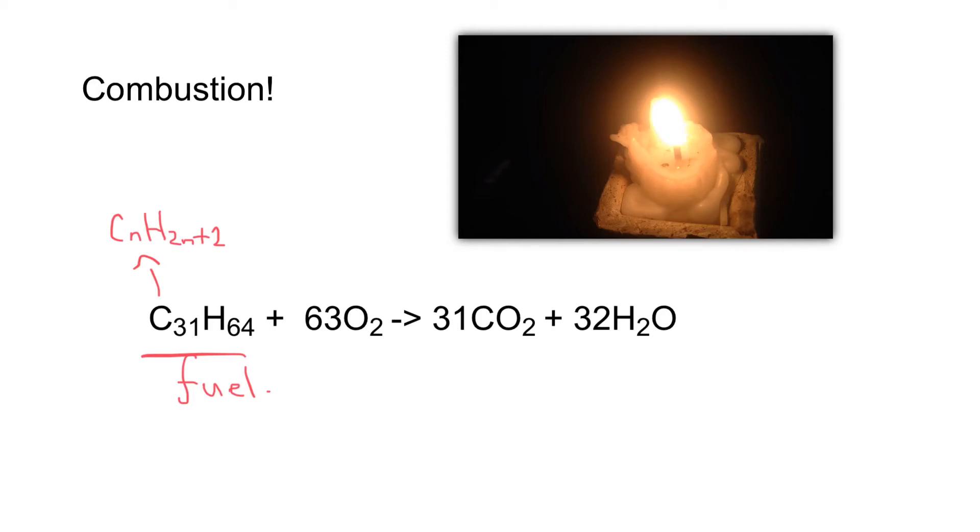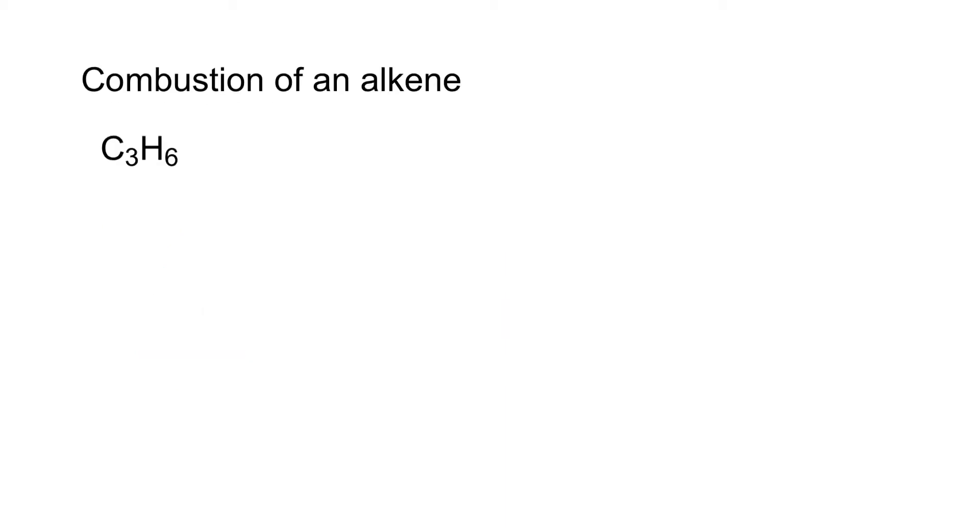We're going to look at a few examples of combustion and see if you can make up your own balanced chemical equation. Combustion is a really nice section because it's easy marks. We're going to do an alkene. This molecule is propene, C3H6, which conforms to the general alkene formula CnH2n.